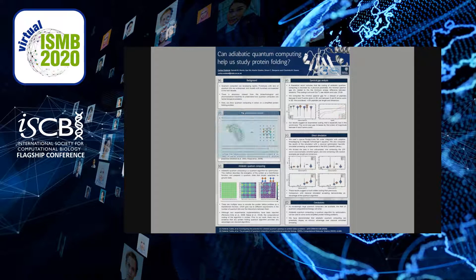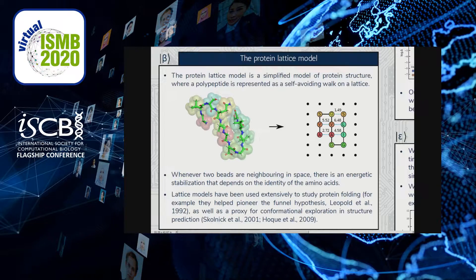The protein lattice model is a simplification of protein structure where we describe a chain of amino acids as a self-avoiding walk on a lattice. A self-avoiding walk is simply a walk on a lattice that tries to avoid itself. In the protein lattice model, interactions between different amino acids lead to energetic stabilization, and the problem consists of finding the self-avoiding walk on the lattice that minimizes this sum of energies.